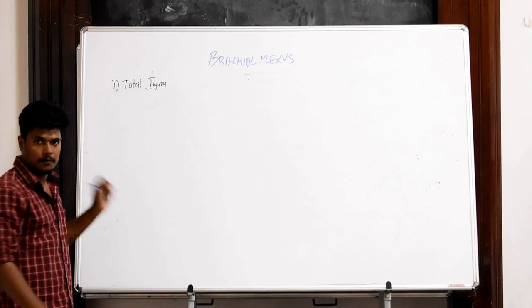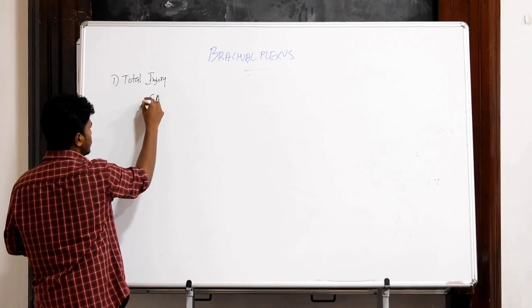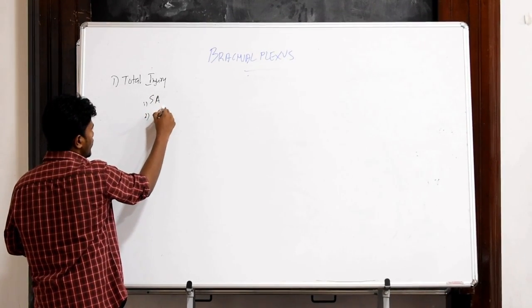The damage to the brachial plexus will cause paralysis, so serratus anterior muscles and rhomboideus muscles.